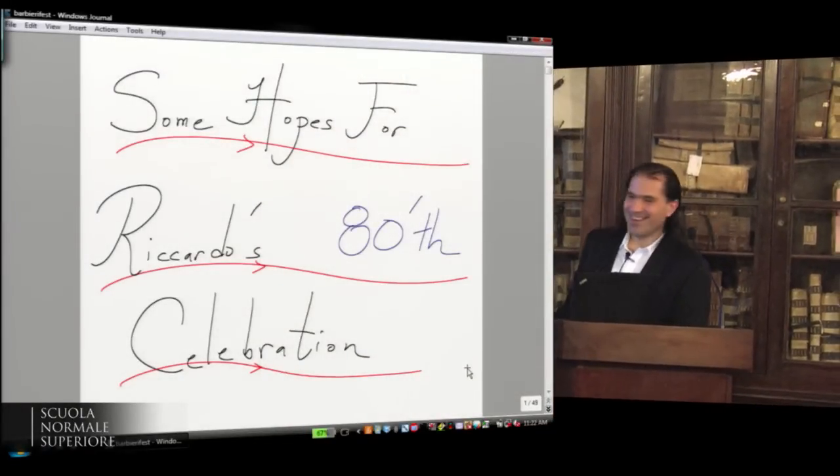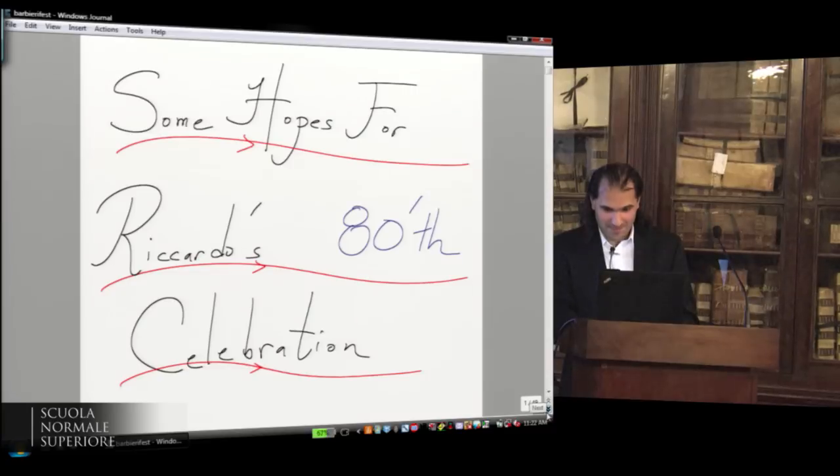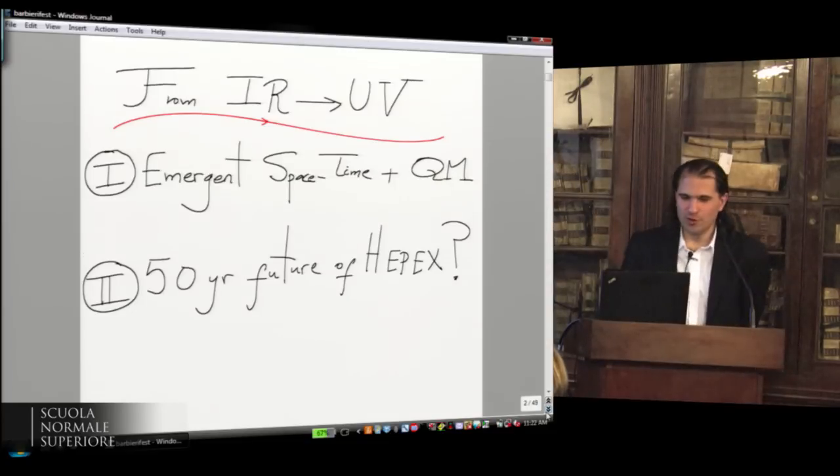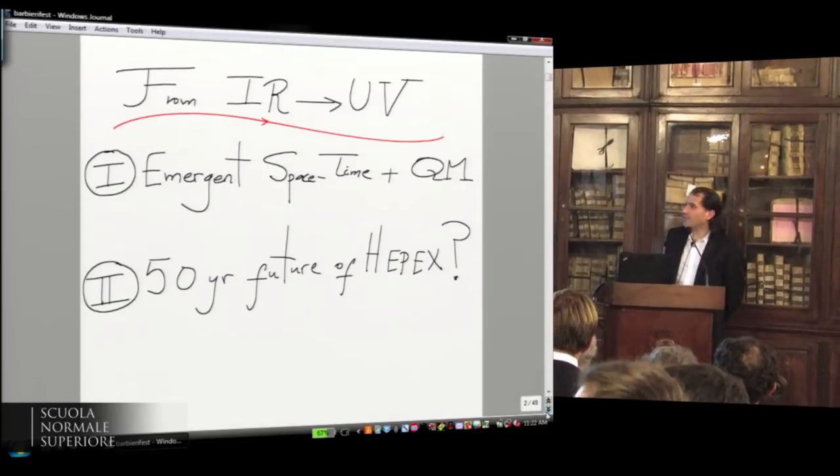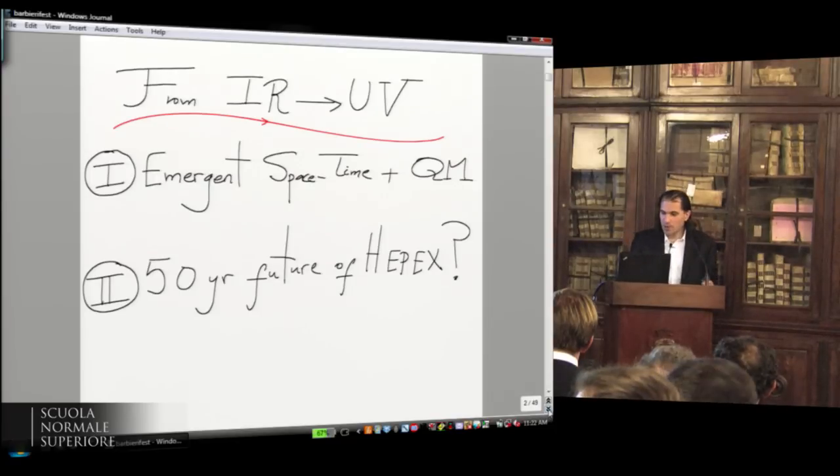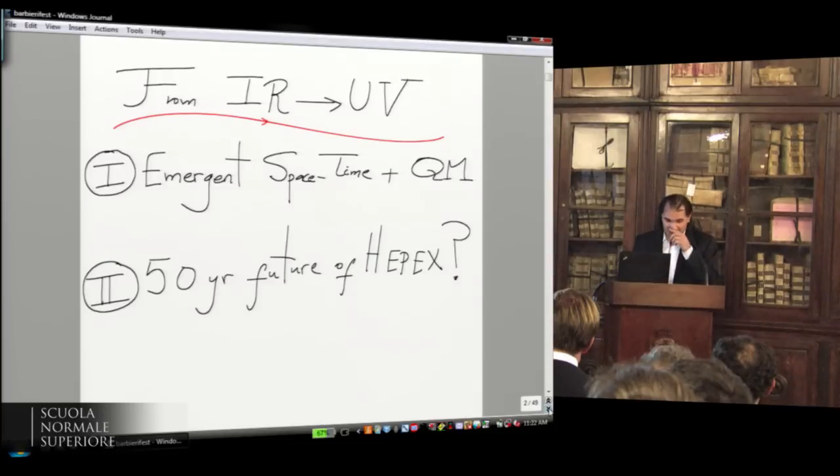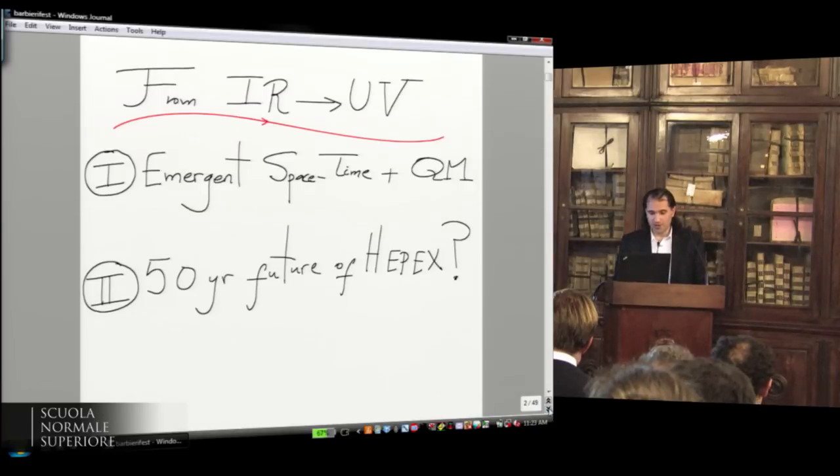And so there are two topics I want to talk about. And don't freak out too much about the 49 slides, okay? So there are two topics I want to talk about. The title I gave is From IR to UV, which is maybe a bit of an inversion of the usual top-down perspective. But there are two big topics that are involved here. One of them has to do with some very important conceptual questions that we have to deal with in the 21st century. That has to do with the ideas of emergent space-time and quantum mechanics. And the other one is what the 50-year future of especially the experimental part of high-energy physics is going to be about.